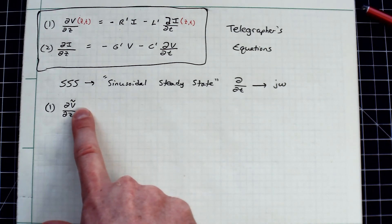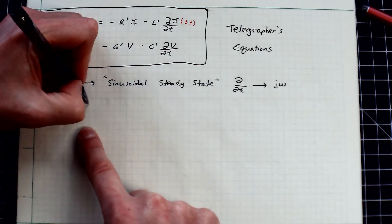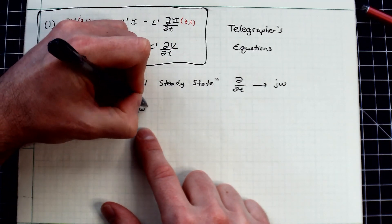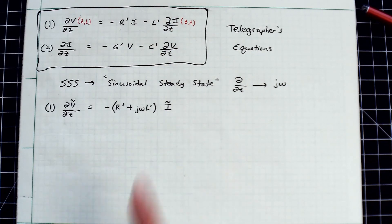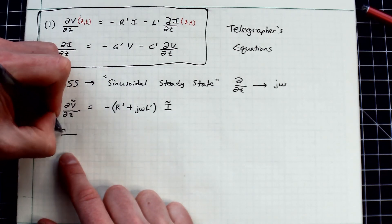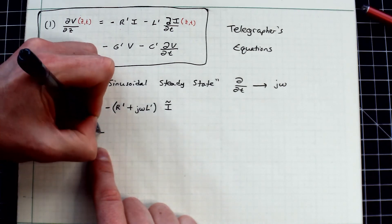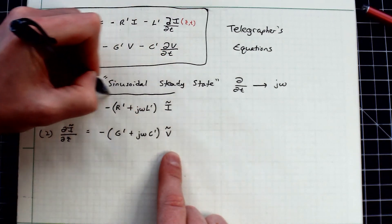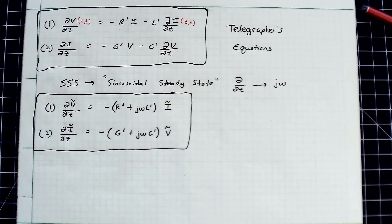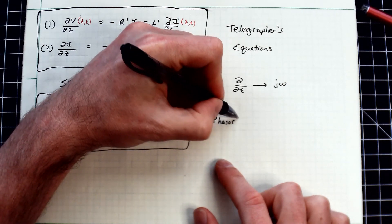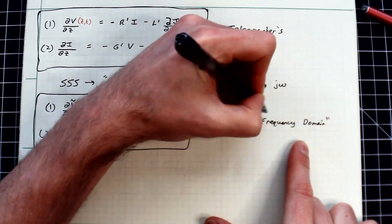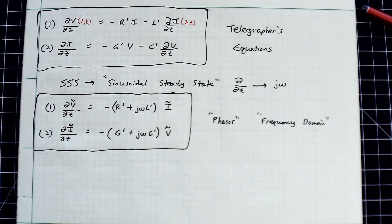The phasor form gives us: ∂Ṽ/∂z = −(R-prime + jωL-prime) · Ĩ, and ∂Ĩ/∂z = −(G-prime + jωC-prime) · Ṽ. These are the telegrapher's equations in their frequency-domain or phasor form, in contrast to the time-domain form above. In the next lectures we'll do some mathematical operations on these to derive some very interesting facts.